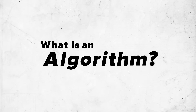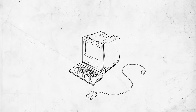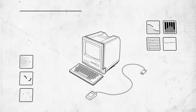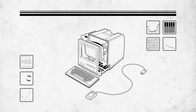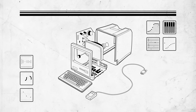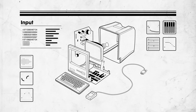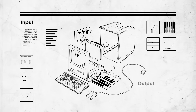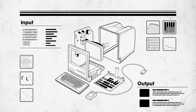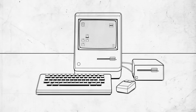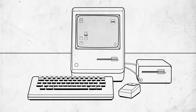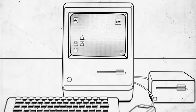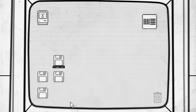What is an algorithm? An algorithm is a set of instructions followed by a computer, where specific inputs are used to produce an output. Algorithms are found everywhere nowadays, including music creation and production.